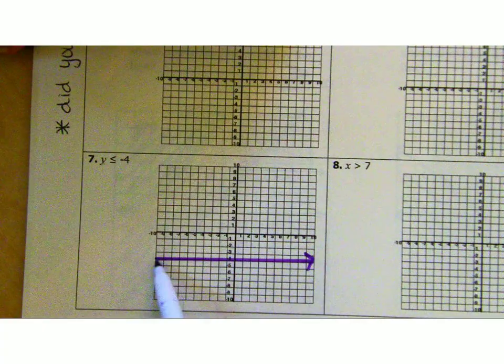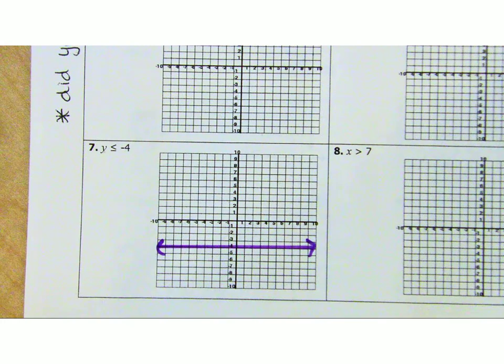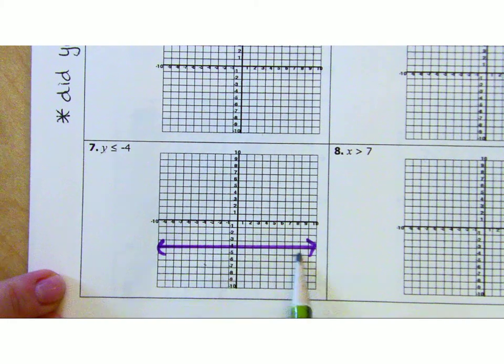But this isn't y equals negative 4. I want to know where on this graph are all the numbers less than that line. Well, this one's pretty darn easy because there's a definite above and below. It's below. So you're going to shade with your solid line right here. That was easy.